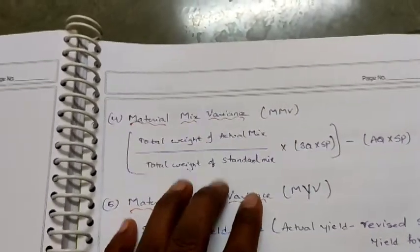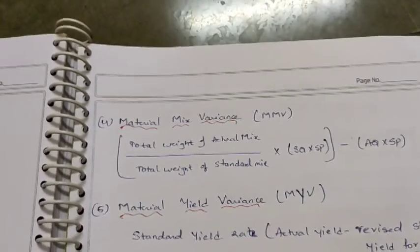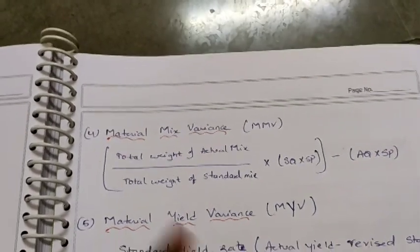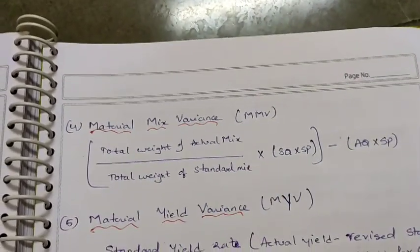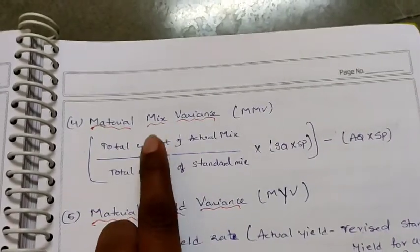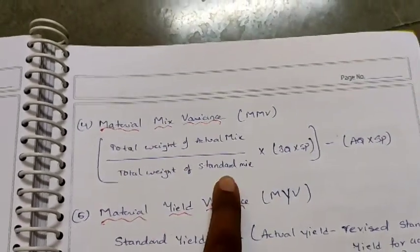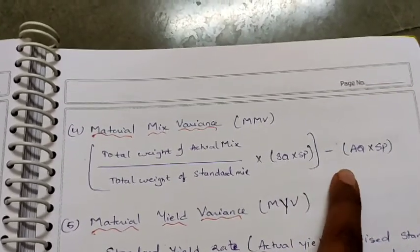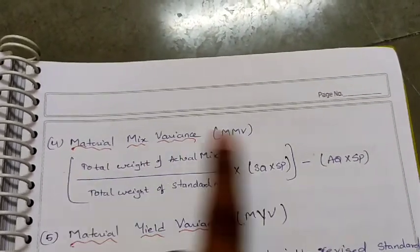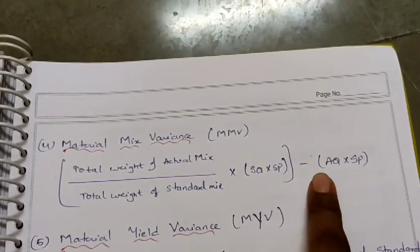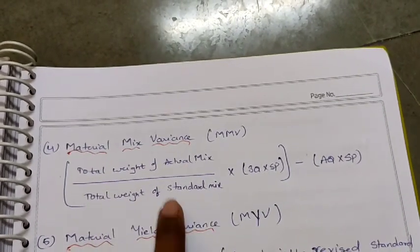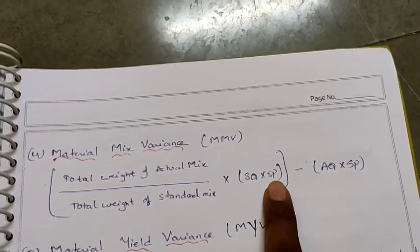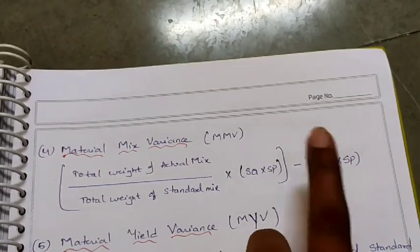Coming to material mix variance, we have a specific formula. If there is a mix variance question in the exam, you apply this formula: Material Mix Variance = [Total weight of actual mix ÷ Total weight of standard mix × SQ × SP] − (AQ × SP). First, take the total weight of actual mix divided by the total weight of standard mix, multiply by SQ × SP, and then subtract AQ × SP.